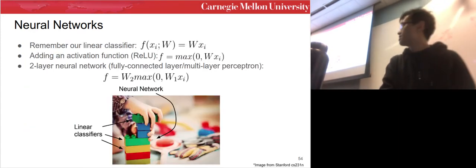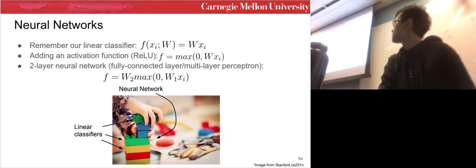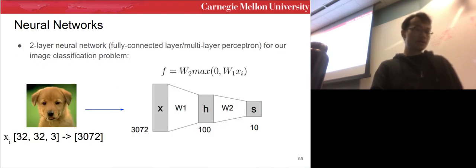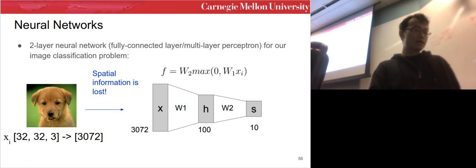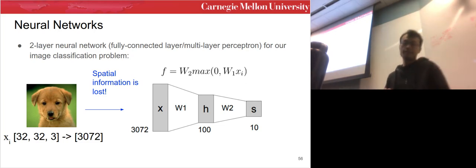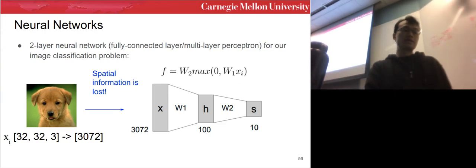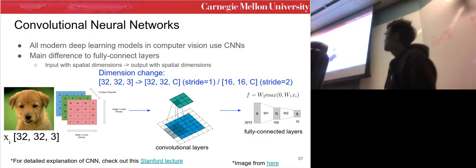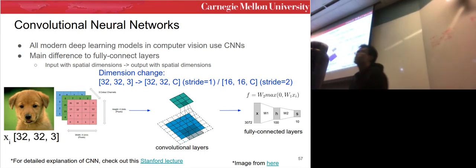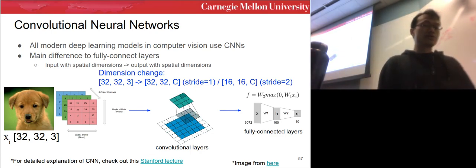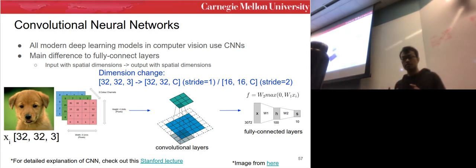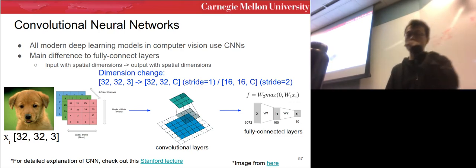Neural networks are just building blocks of linear classifiers and activation functions. For image classification with a two-layer neural network, we flatten the input image into a vector, pass it through two fully connected layers, and get 10 class scores. However, there's a problem: spatial information is lost when we flatten the tensor into a vector. This leads us to convolutional neural networks, where almost all modern deep learning models use CNNs — the main difference is that the input has spatial dimensions and the output also retains spatial dimensions.